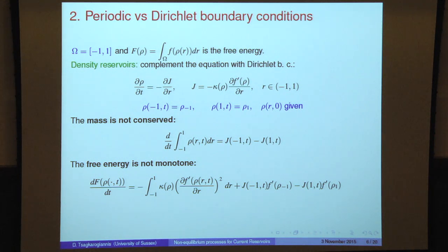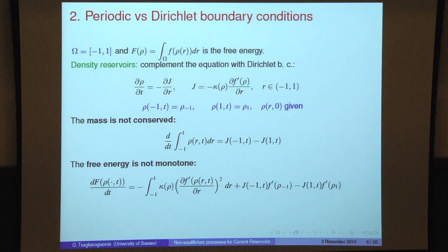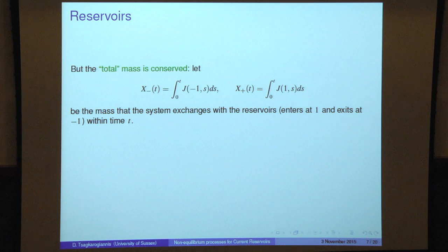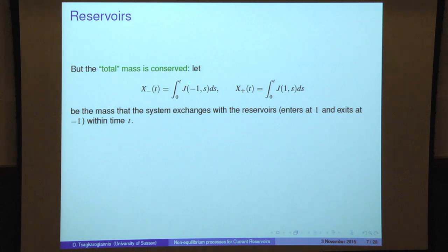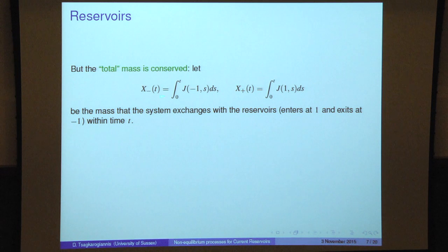This is not a problem, because my system is not only the medium — it is a system with the reservoirs. I have to take that into account and define the total mass and total energy, namely the mass of the medium plus the mass of the reservoirs, and similarly for the energy. So I define what the mass of the reservoirs would be: the mass of the reservoirs is essentially what comes in or goes out from the system. For the left reservoir, I integrate all the current that flows out or in over time t. The same for the right reservoir.